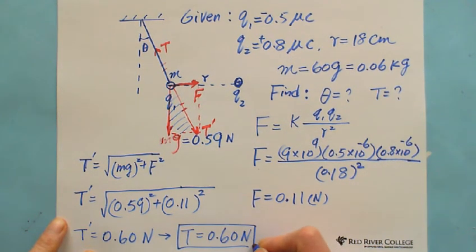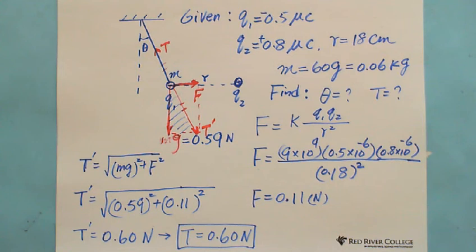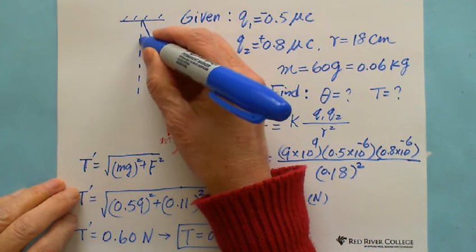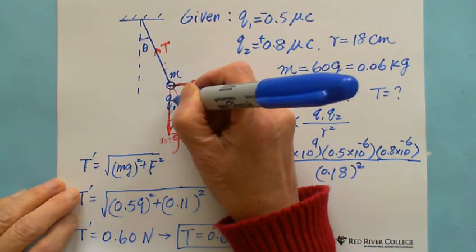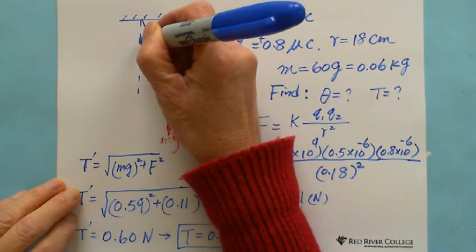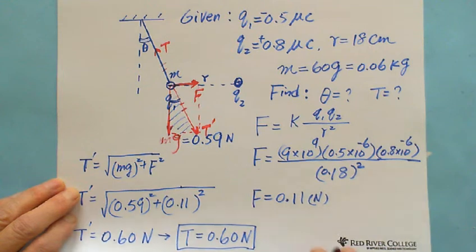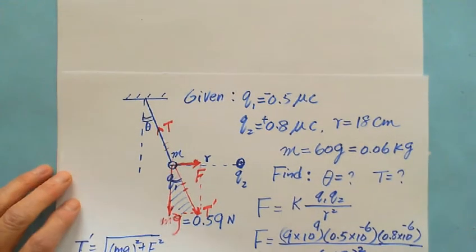After getting this one, then you can find the angle. What is the angle? This angle, you call this angle. Same thing, just these two angles are equal. So you can calculate the angle.